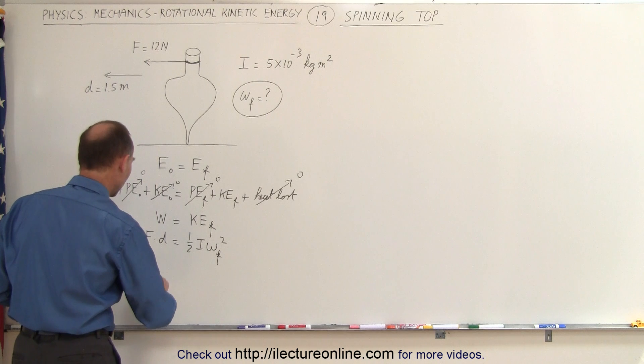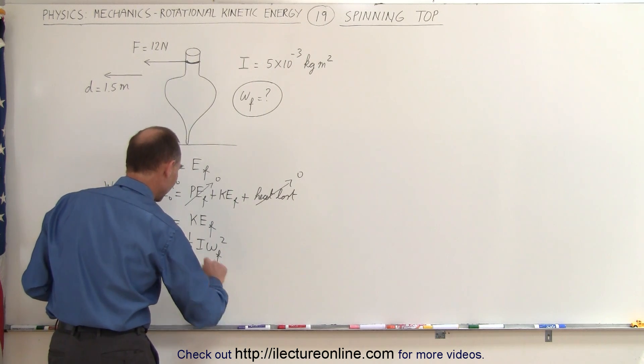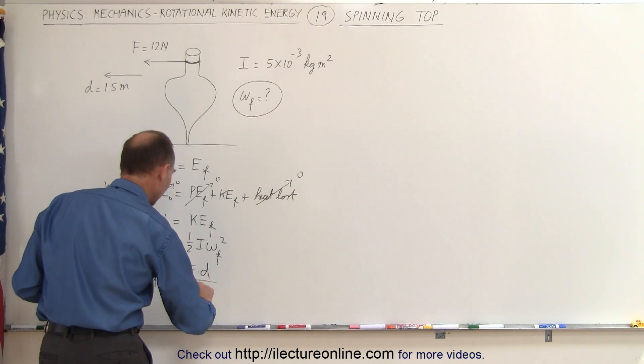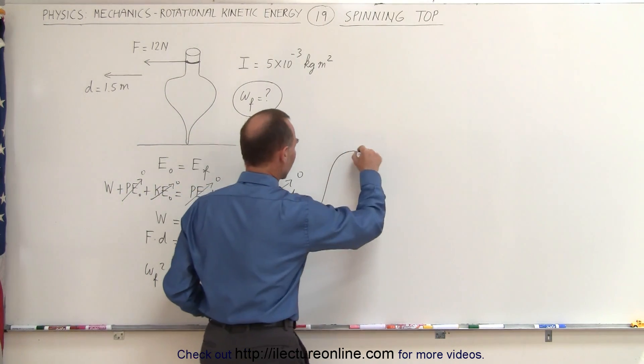To solve for this, we can say that omega final squared is equal to two times the force times the distance divided by, when we divide both sides by I, we get the moment of inertia here. Which means, going over to this side of the board, that the omega final is equal to the square root of two times the force times the distance divided by the moment of inertia of this top.